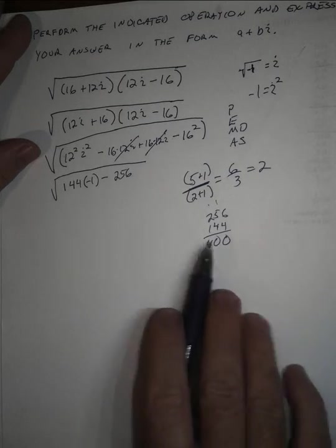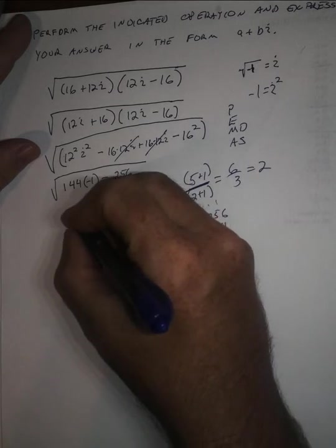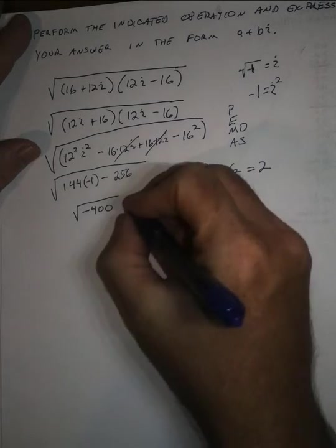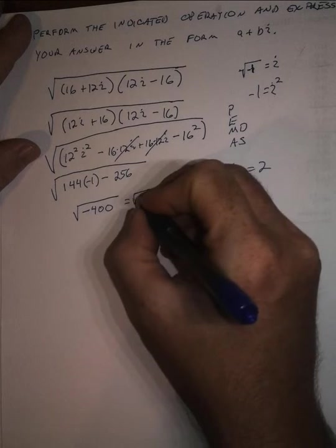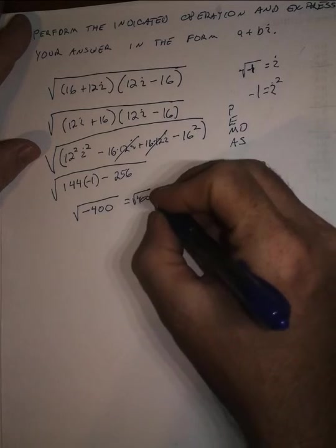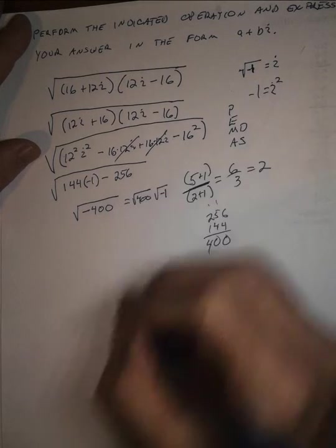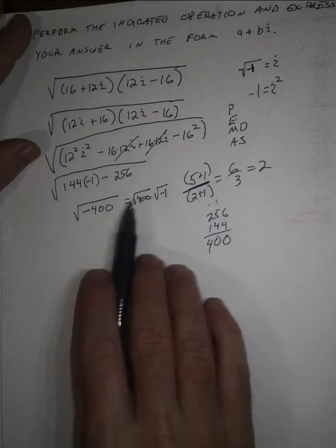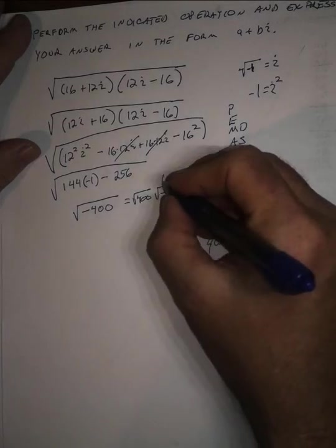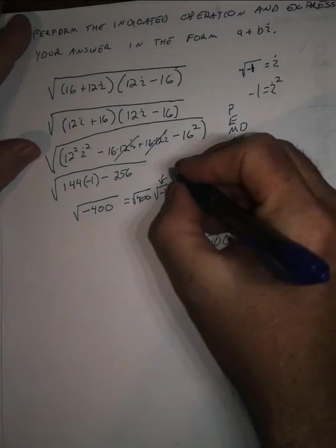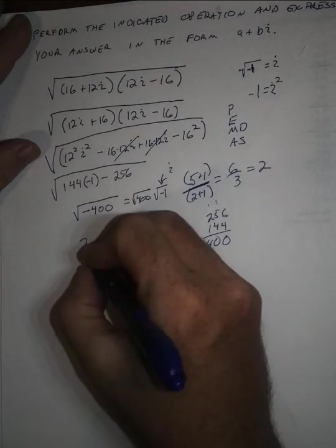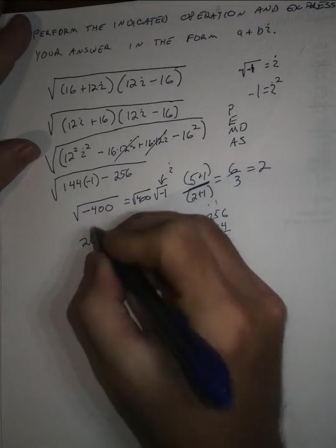This is the principal square root of negative 400, which is the principal square root of 400 times the square root of negative one. The square root of a product is the product of the square roots. This guy is, again, our friend i. And the principal square root of 400 is 20. So the answer to this problem is 20i.